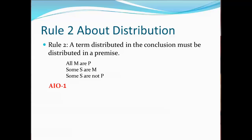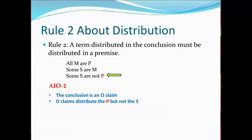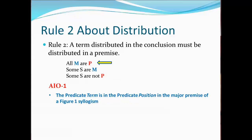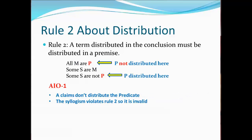Let's look at the second rule. It says that for a syllogism to be valid, if a term is distributed in the conclusion, it must be distributed in a premise. Here's an example of a syllogism in the AIO mood and in the first figure. The mood tells us that the conclusion is an O claim, and O claims distribute the predicate but not the subject. The predicate term is in the predicate position in the major premise of a Figure 1 syllogism. To satisfy Rule 2, the predicate term must be distributed, but the major premise is an A claim in Figure 1, and A claims don't distribute the predicate. There is a term distributed in the conclusion but not in a premise, so the syllogism is invalid.